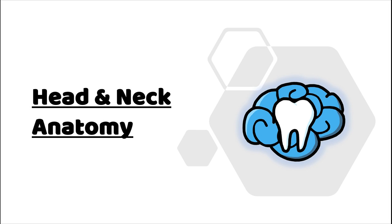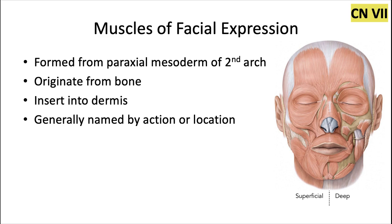Hey everyone, Ryan here, and welcome back to our head and neck anatomy series. In this video, we're going to be talking about the muscles of facial expression. These are very thin muscles responsible for making facial expressions like smiling and frowning. They're formed from the paraxial mesoderm of the second pharyngeal arch — the muscles of mastication came from the first pharyngeal arch — and so these muscles are innervated by the cranial nerve of the second arch, which is cranial nerve 7, or the facial nerve.